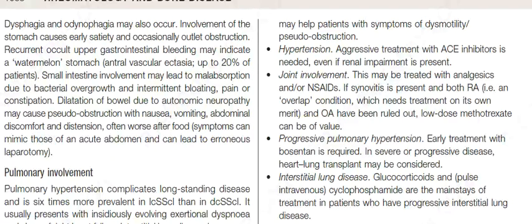Hypertension: aggressive treatment with ACE inhibitors is needed, even if renal impairment is present. Joint involvement may be treated with analgesics and/or NSAIDs. If synovitis is present and both rheumatoid arthritis (an overlap condition which needs treatment on its own merit) and osteoarthritis have been ruled out, low-dose methotrexate can be of value.